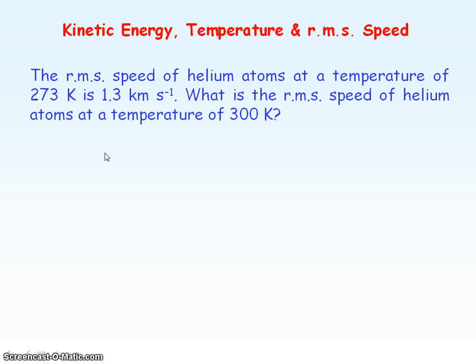For this question, we need to use this relationship of RMS speed directly proportional to the square root of the absolute temperature. We need to determine the ratio of the temperature, which would be 300 divided by 273.